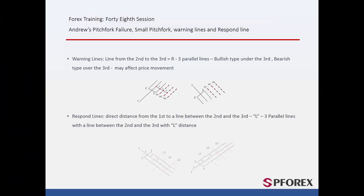Warning Line: In an Andrew's pitchfork pattern, a trader can measure the distance between the third and the first pivot lines, called R. In a bullish type, three parallel lines can be drawn under the third pivot line. In a bearish type, three parallel lines can be placed over the third pivot line. The gap between each line equals R. Each line may have considerable effect on a market price movement.